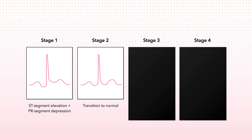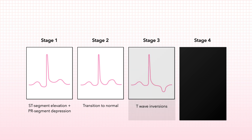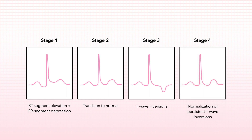The ST and PR segments usually normalize during the transitional second stage. The third stage is marked by fused T wave inversions, while the fourth is represented by either normalization of the ECG or permanence of the T wave inversion. This temporal evolution of ECG changes is highly variable, and with disease progression, other non-specific abnormalities may develop as well.